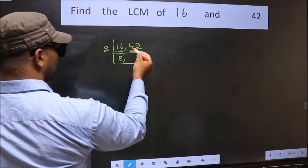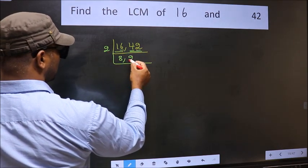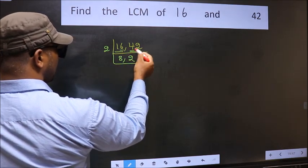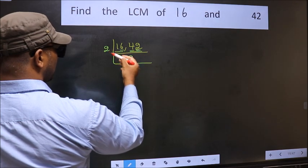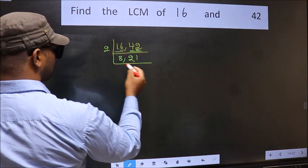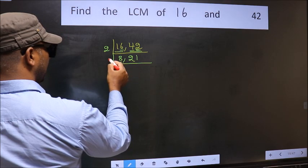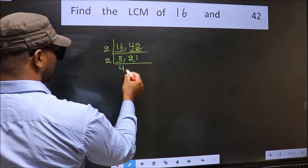First number 4 — when do we get 4 in the 2 table? 2 times 2 is 4. The other number 2 — when do we get 2 in the 2 table? 2 times 1 is 2. Now here we have 8 — 2 times 4 is 8.